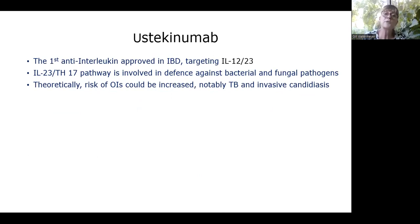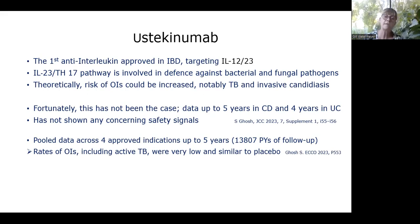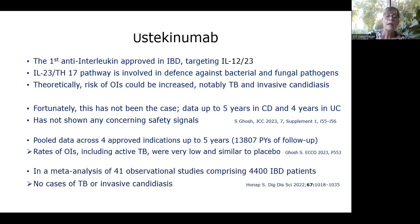Always keep Listeria monocytogenes high on the differential for anyone on anti-TNF who presents with CNS features. If CT brain is normal — which it more often is — MRI is the best modality. Moving to newer agents: vedolizumab is a gut-selective monoclonal antibody targeting alpha-4-beta-7 integrin, inhibiting trafficking of lymphocytes into the GI tract. It has an excellent safety profile with very low risk of opportunistic infections in RCTs, post-marketing studies, and a large body of real-world evidence. There may be a small increase in GI infections including C. diff. Unlike natalizumab, no cases of PML have been reported.